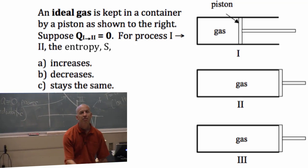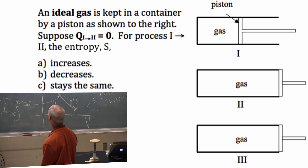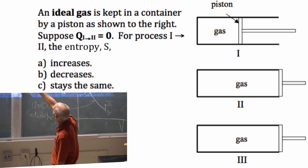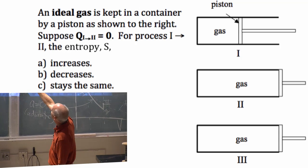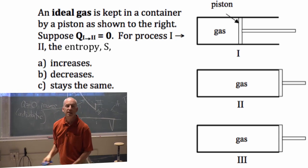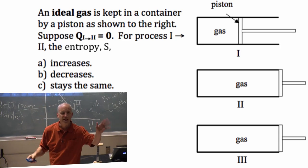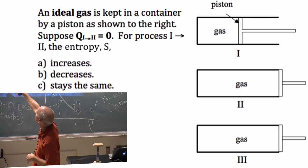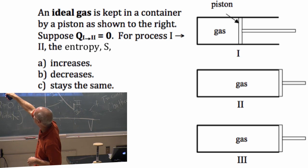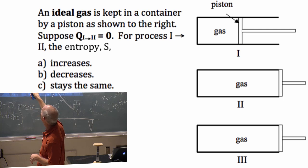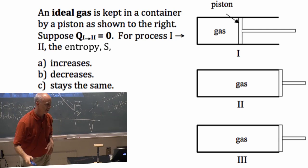Back here again, same three steps. Ideal gas is kept in a container. Suppose Q from one to two is zero. Friction-free piston for process one to two, the entropy S: A increases, B decreases, C stays the same.